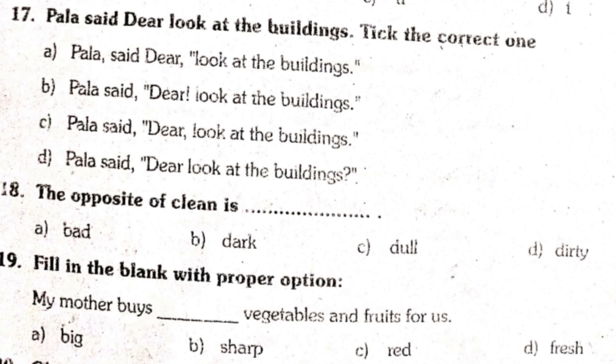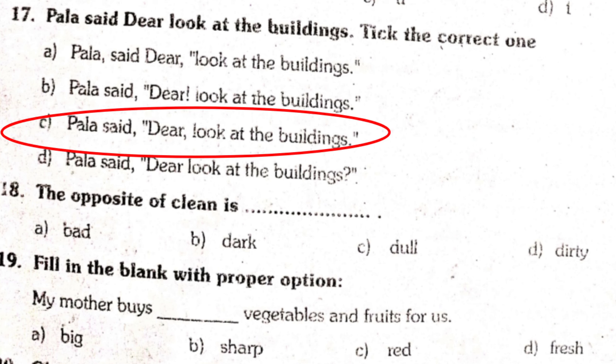17th question. Dear, look at the buildings. Tick the correct one — 1st, 2nd, 3rd, or 4th. In 4 options mein se, bacho, C option jo hai woh correct answer hai. Usmein jo sahi punctuation lagi hui hai. Theek hai?